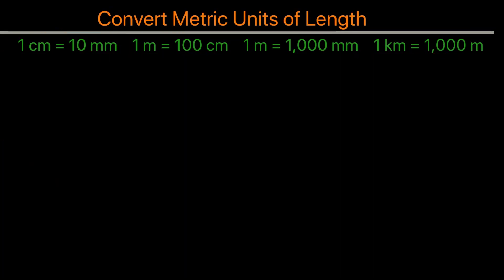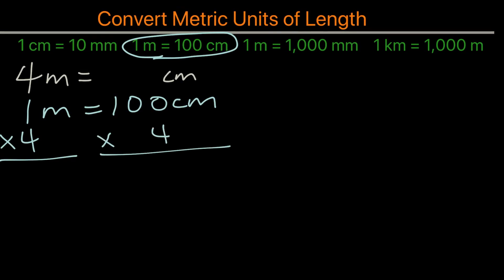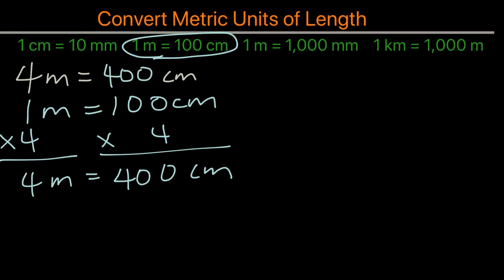So our answer would be seven. Now what about this one? 4 meters equals how many centimeters? We want to use this conversion here: 1 meter equals 100 centimeters. To get to four, we multiply both sides by four. This gives us 400 centimeters equals 4 meters, so we input 400 centimeters.